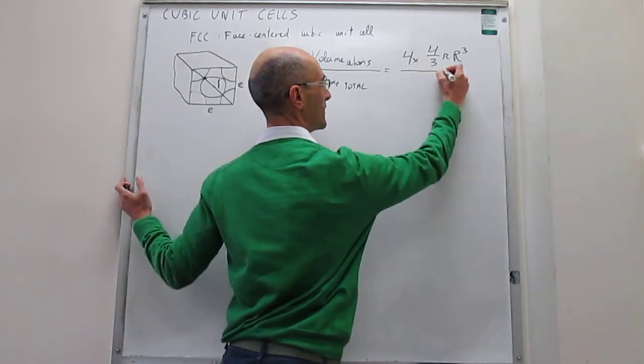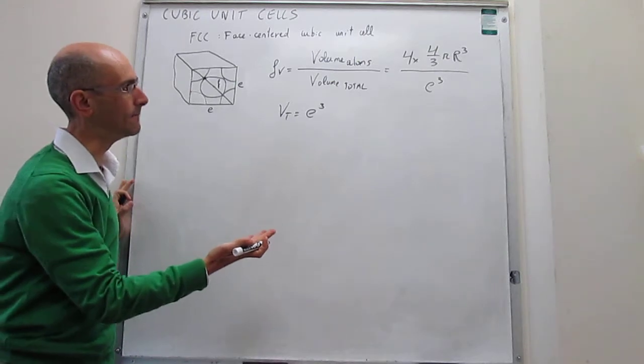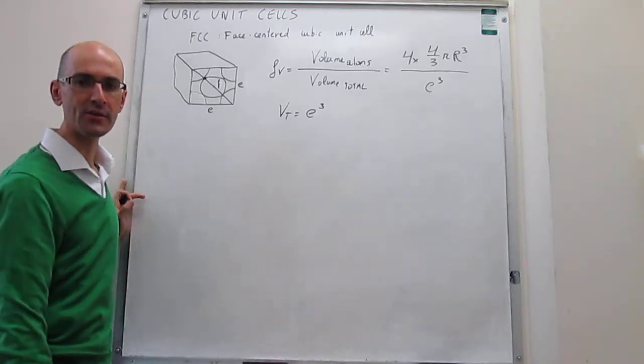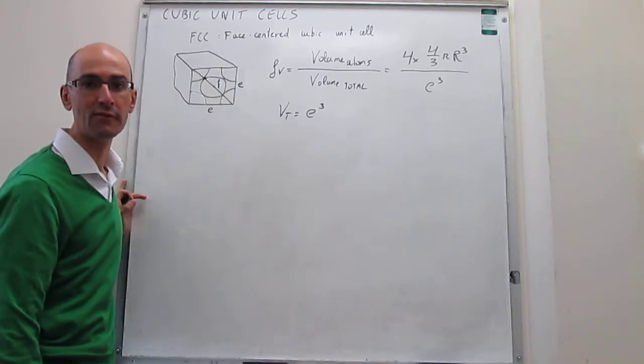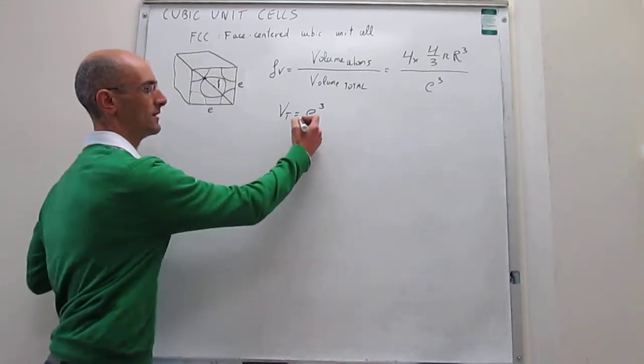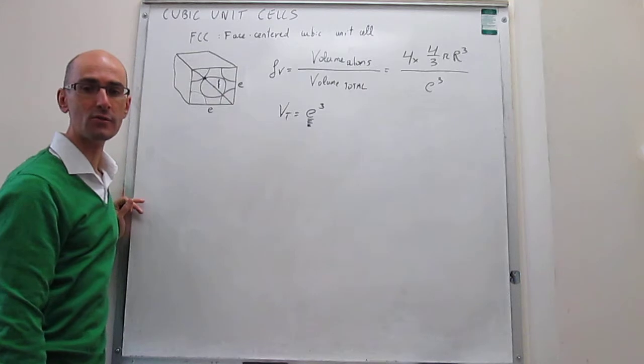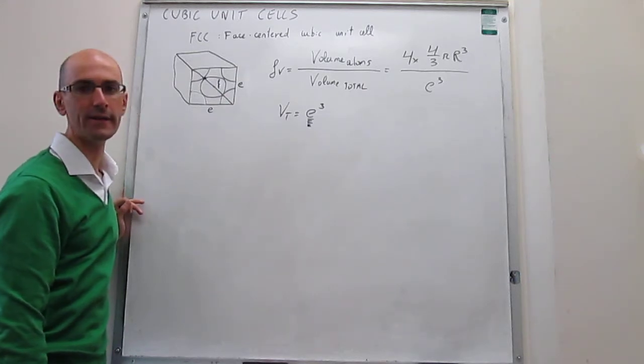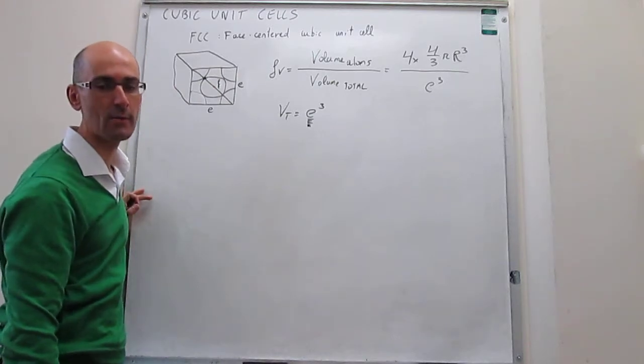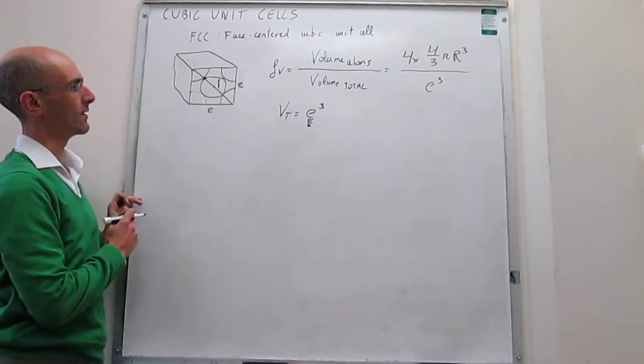So this we have to divide over E cubed, and a problem that we have right there is that nothing seems to cancel out to get a number like 0.5, which would correspond to 50% packing efficiency, or 0.7. So something that we have to do is try to put this edge as a function of the radius of the atom, so that you can have some sort of term cancellation right there.